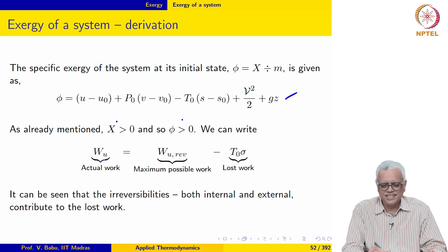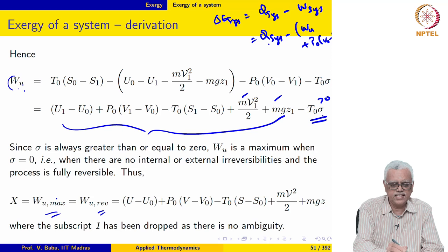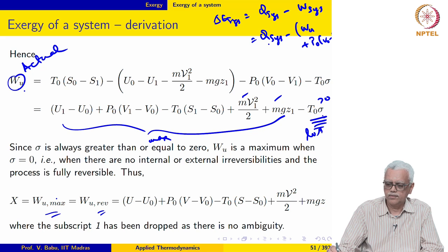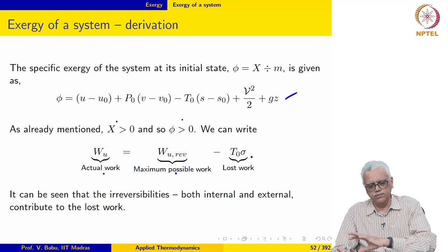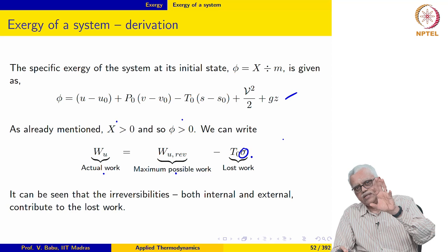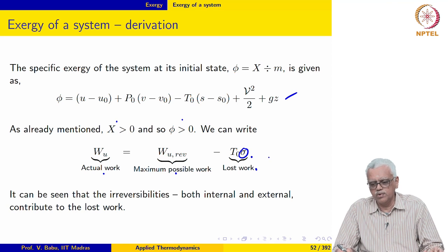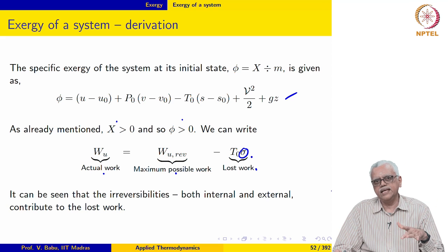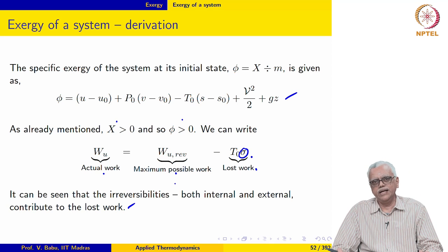W_U actual equals maximum possible work minus lost work. What we are saying is: this is the actual work, this is the maximum work, and this is lost work. When a system executes a process from state 1 to state 0, the actual work equals reversible work minus lost work. This was the reason why we paid so much attention to calculating sigma — whether it was a flow process or non-flow process — sigma represents lost work, and is a consequence of both internal and external irreversibilities.